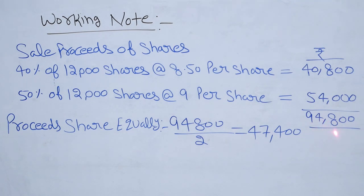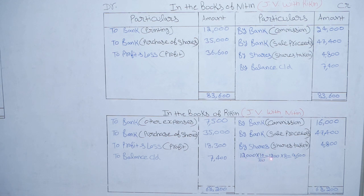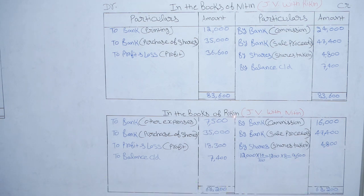Total sale proceeds = Rs 94,800. This sale proceeds is shared by Nitin and Rikin equally, so 94,800 ÷ 2 = Rs 47,400 each. By Bank — Sale Proceeds Rs 47,400 for Nitin, and Rs 47,400 for Rikin. For the 10% taken over equally at Rs 8 per share: 12,000 × 10% = 1,200 shares × Rs 8 = Rs 9,600. Half = Rs 4,800 each. By Shares Taken — Rs 4,800 for Nitin and Rs 4,800 for Rikin.